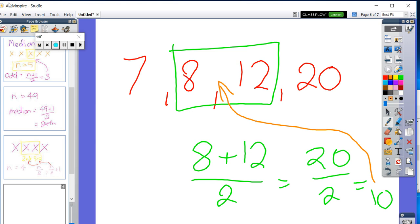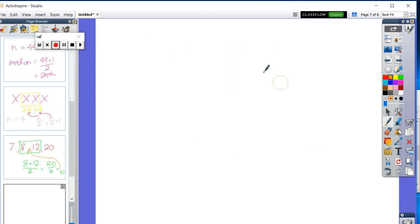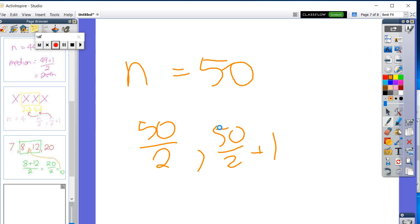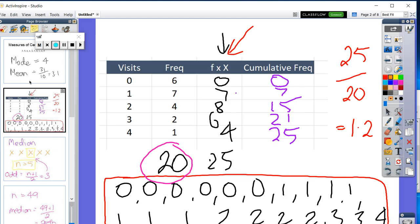Now, if we had N equals 50. Then, 50 divided by two and 50 divided by two plus one are the two positions. Which is the twenty-fifth and the twenty-sixth positions. And then you need to go work it out. So, let's go back all the way to here.